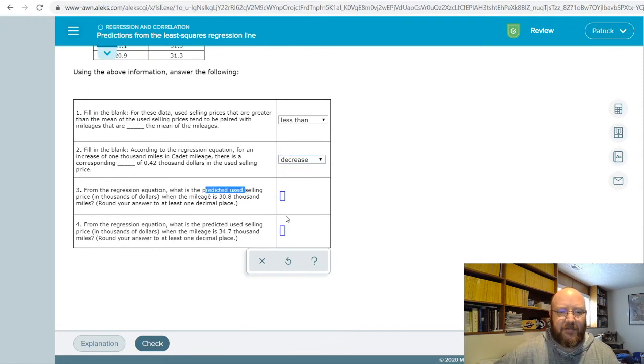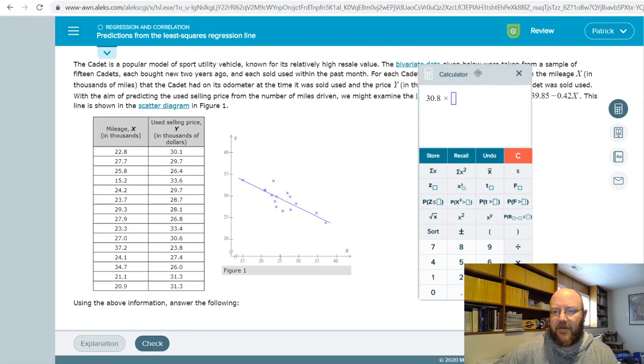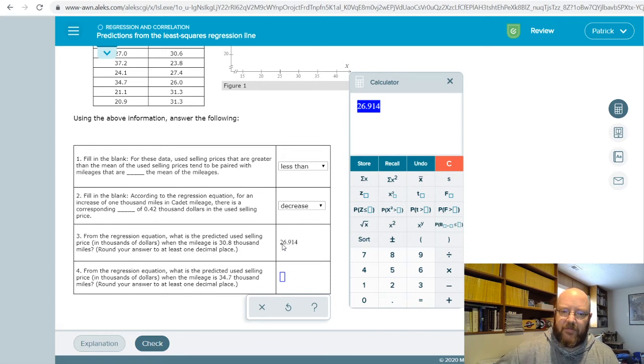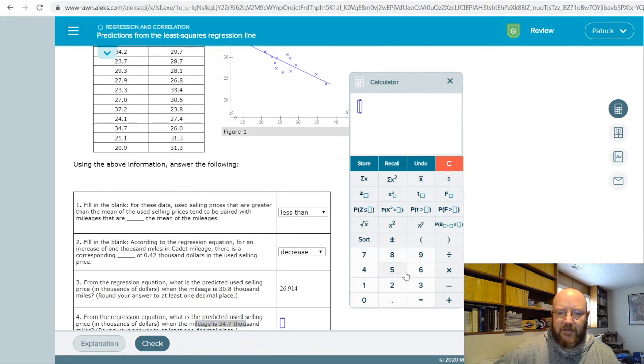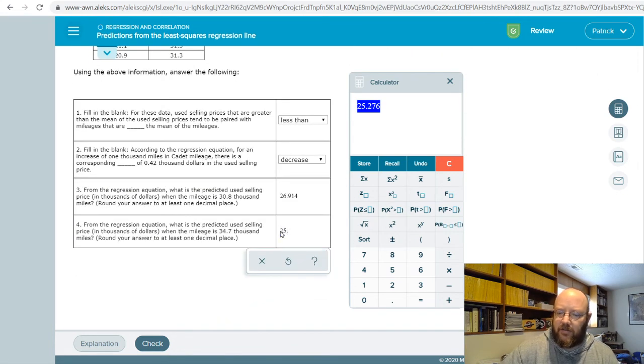From the regression equation, what's the predicted used selling price when the mileage is 30.8 thousand. So predicted value means that we have to calculate it, 30.8. Let's go ahead and punch that into that regression equation, which is right there. Times negative, our slope, 0.42. And then our intercept is still positive. So we would add in our intercept, 39.85. So 26.914. Next one, regression equation, what's the predicted used selling price when the mileage is 34.7 thousand. So 34.7 thousand multiplied by negative 0.42, and then add that 39.85, our intercept. There we go, 25.276.